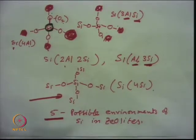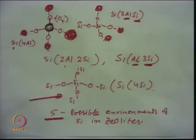All five environments can be detected by MAS NMR. This is the application of MAS NMR — it can talk about all five types of environments possible in a silica zeolite material. This happens during gel formation — oxygen-membered rings are connected by condensation, forming secondary building units.